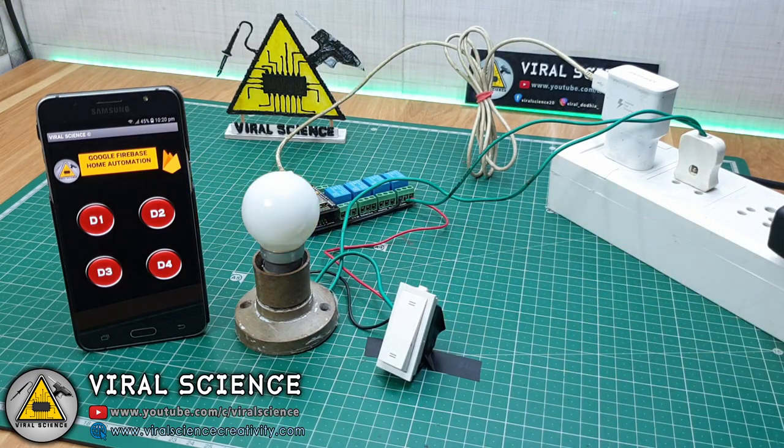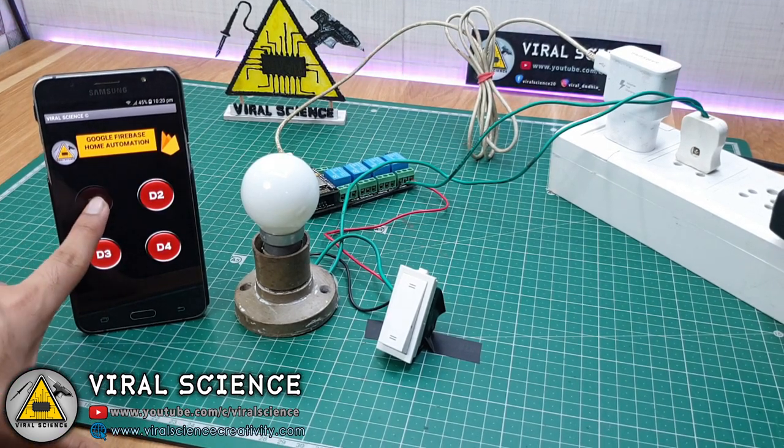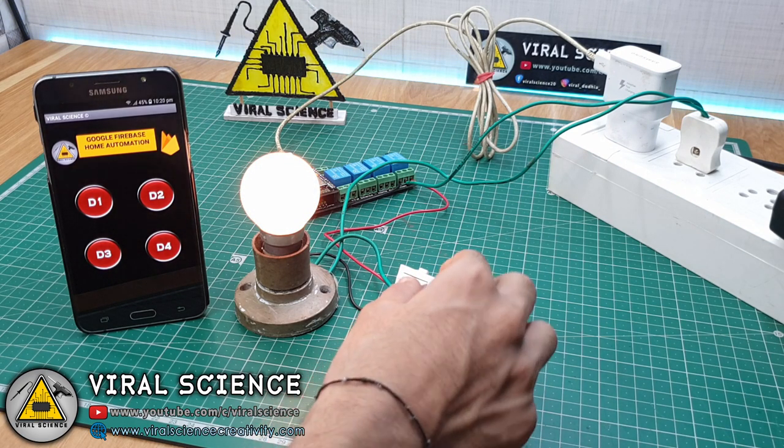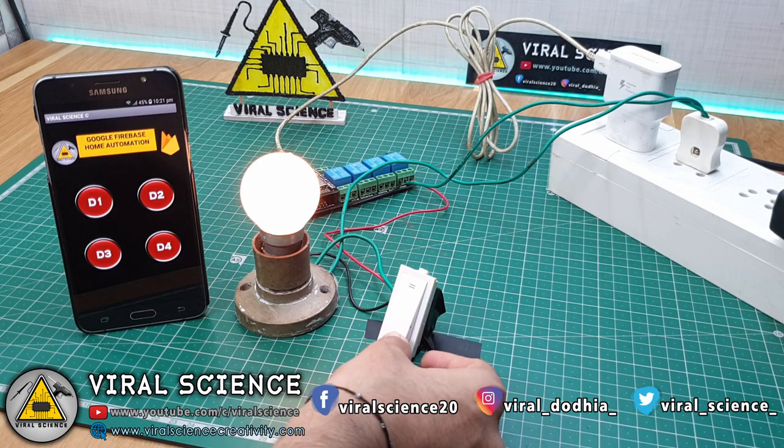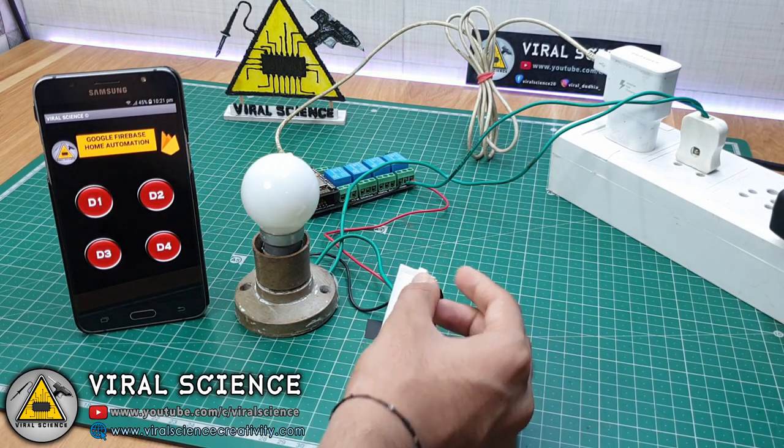So I have powered the NodeMCU and our circuit. Now it's turned on. I will turn off with the switch. And you can also do the same thing with the button on your smartphone. So you can see it is controlled manually by the switches and also with the smartphone. You can control this with your smartphone from anywhere around the world.